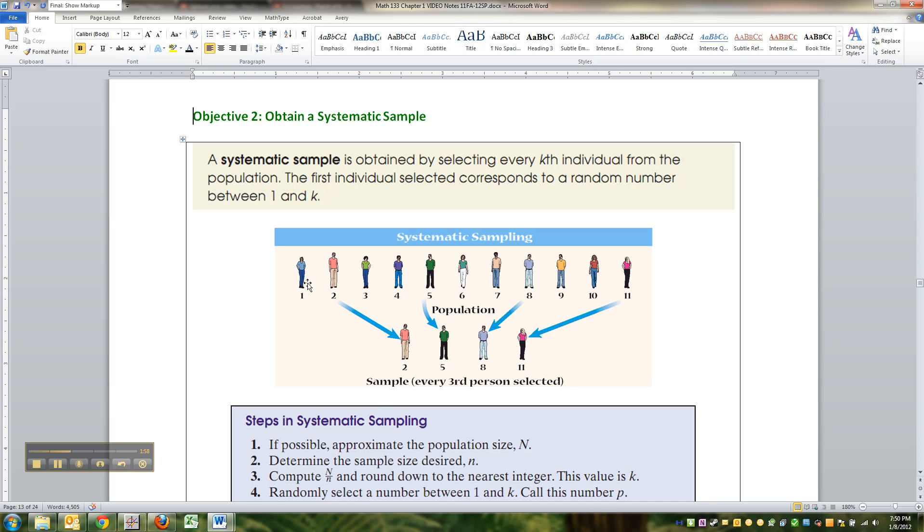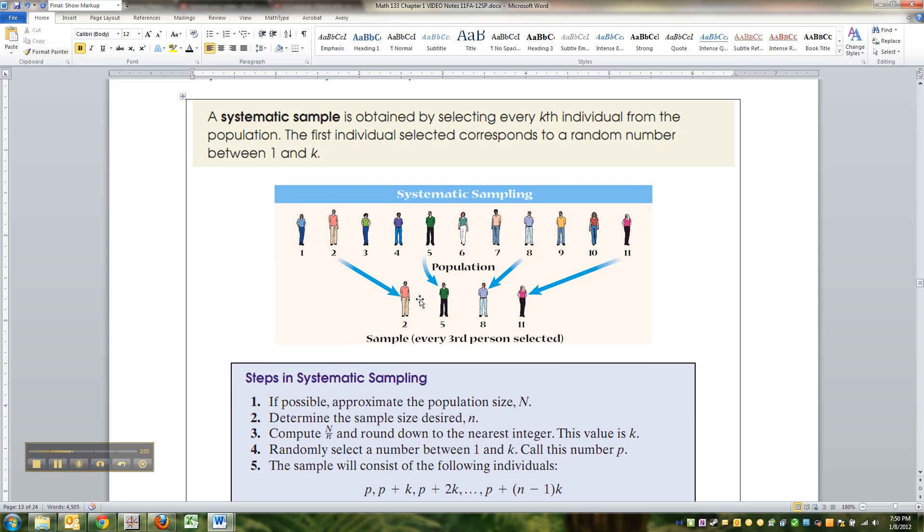So, for example, if you've got them listed out from one through twelve, then you get every third person here. So person number two, one-two-three, person number five, one-two-three, person number eight, one-two-three, person number eleven, right?